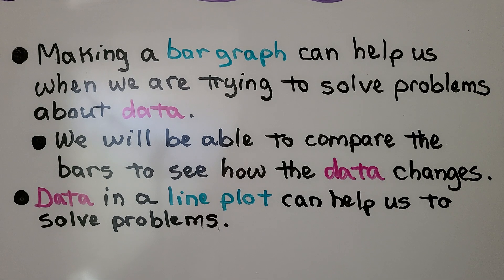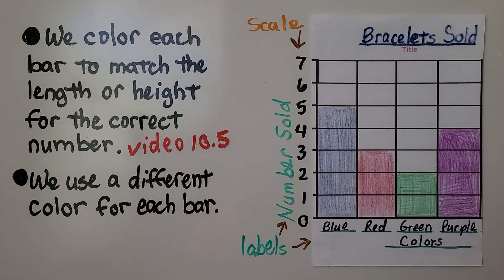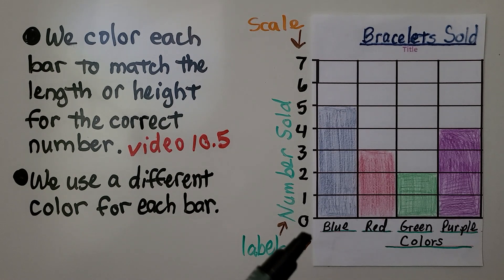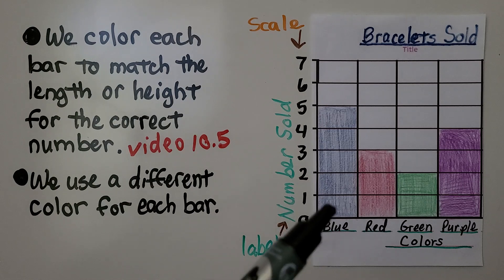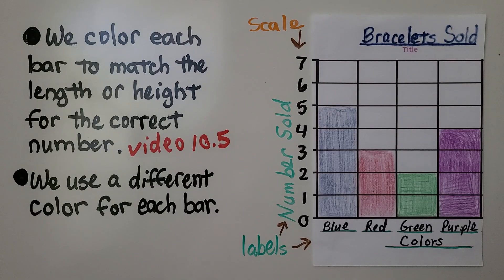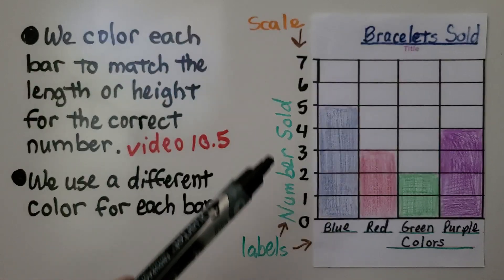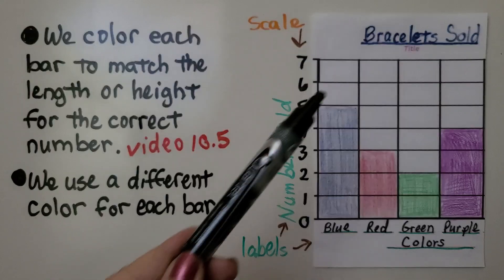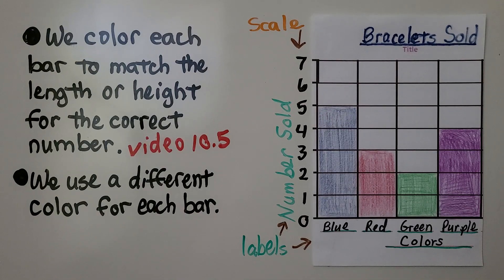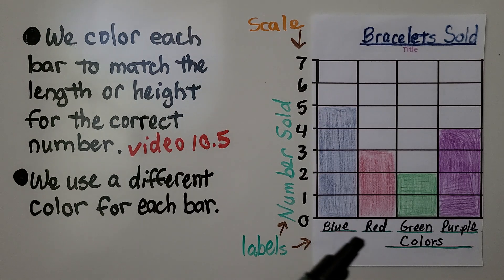Data in a line plot can also help us to solve problems. For a quick review about the parts of a bar chart, we color each bar to match the length or height for the correct number. If it tells us blue is 5, we color the bar up to the number 5 on the scale. You can see the scale with the numbers and a label that says 'numbers sold,' and this whole chart is about how many bracelets were sold. We also have a label showing the names of the bars, and the label for the bars is 'colors.'